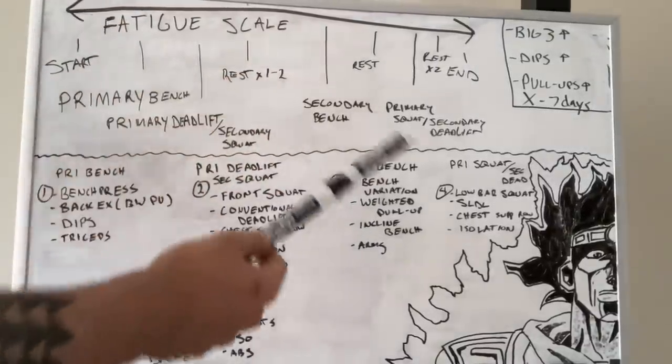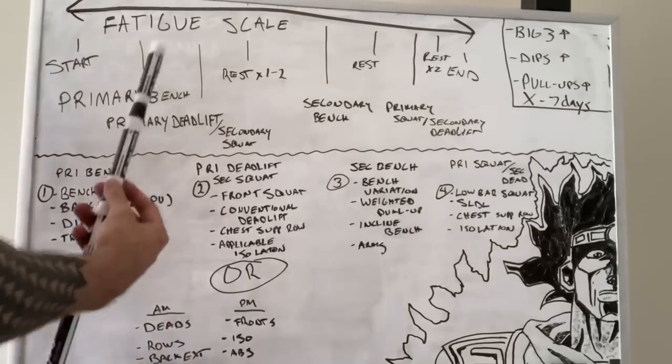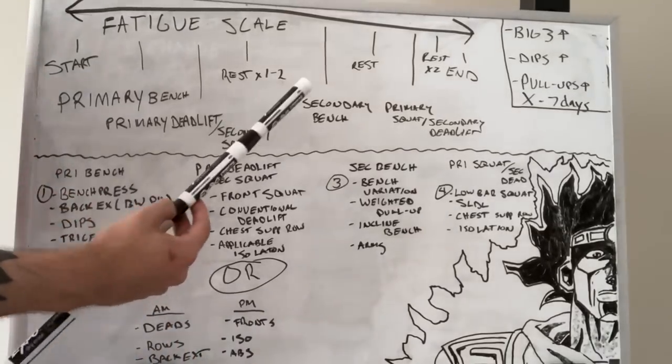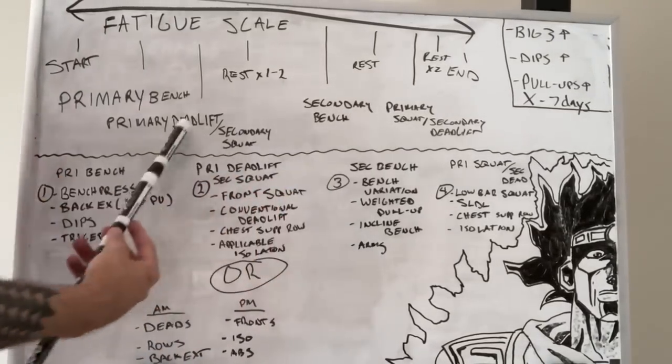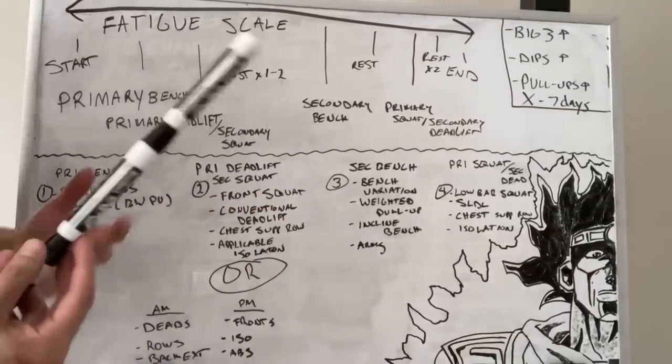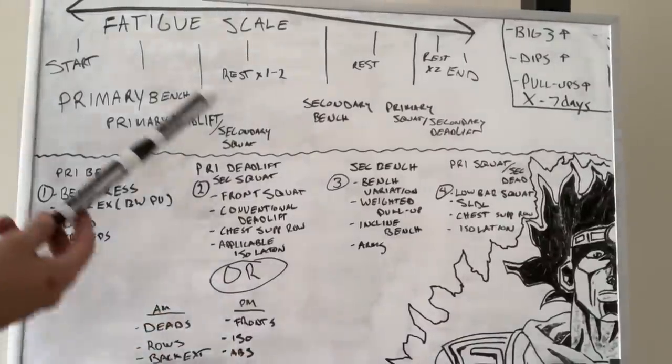Primary day and secondary day. Primary means most important. Secondary means it is second to the primary day — so it's the second most important day of the week.